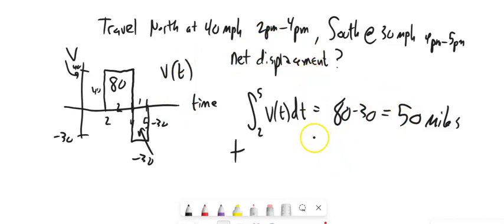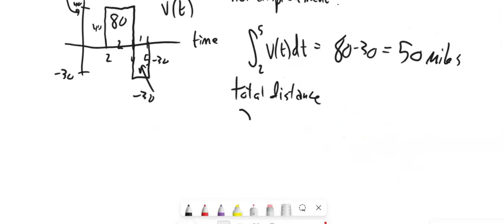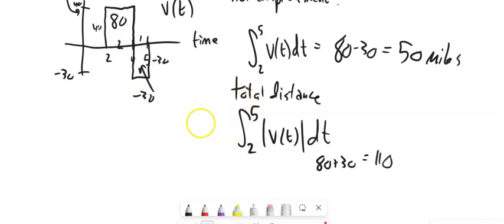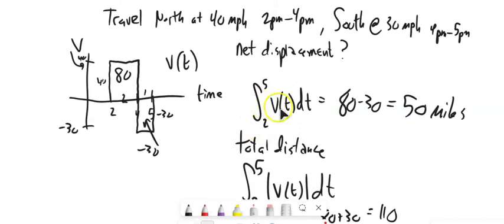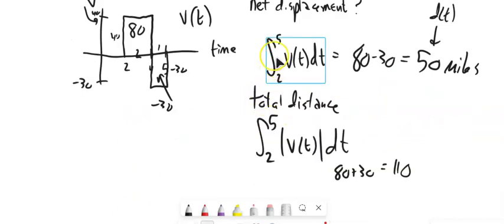Notice if we wanted the total distance traveled, that's a different question. And the way that we would alter that is we'd say absolute value of that. We just want to add up all of the magnitudes and not worry about sign. And since this is 80 and negative 30, we know that that would be 80 plus 30, which would give us 110. So, we took the integral and it gave us the net change. And I said derivative, I meant integral.